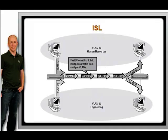The second issue with ISL is frame size. If a frame is received that is already at the MTU, the addition of the 26-byte header and 4-byte trailer can create frames that are over the Ethernet MTU of 1,518 bytes. With ISL encapsulation, frames are now at 1,548 bytes, which will be dropped as giant frames by devices that do not recognize the ISL encapsulation.